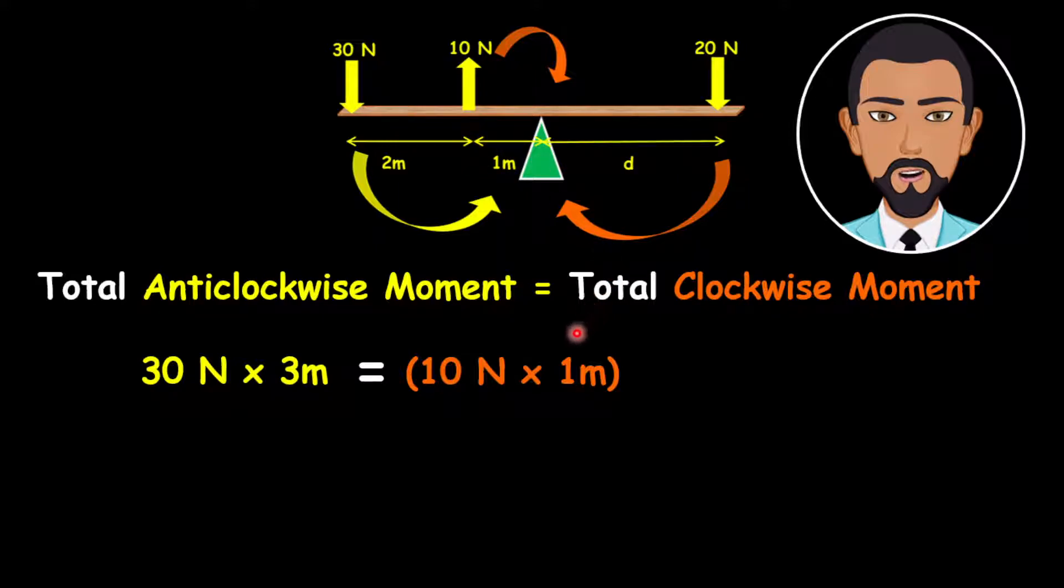We're going to add this to the other moment. And so this is added to the moment created by the 20 newton force. So it could be 20 multiplied by D, which is the unknown distance from the pivot to the 20 newton force.